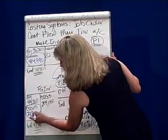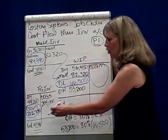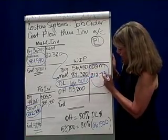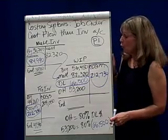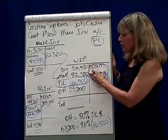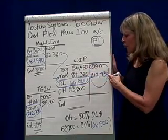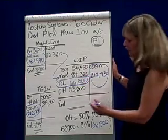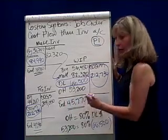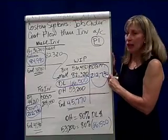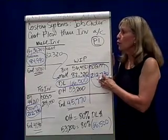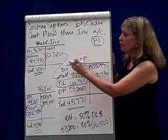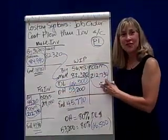Cost of goods manufactured is $212,730, and that comes out of work in process. Now I can find ending work in process: beginning work in process plus materials plus labor plus overhead minus cost of goods manufactured gives us ending work in process inventory of $45,770. As you can see, we've gone through the debits and credits in the three inventory accounts — material inventory, work in process, and finished goods.